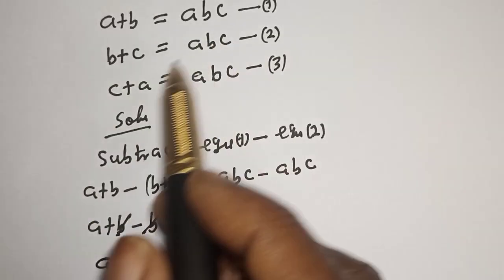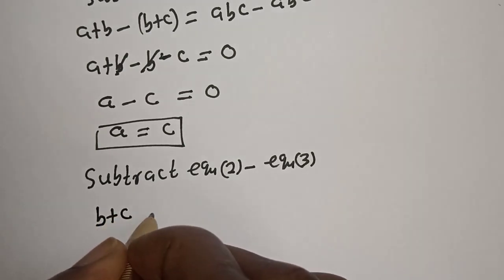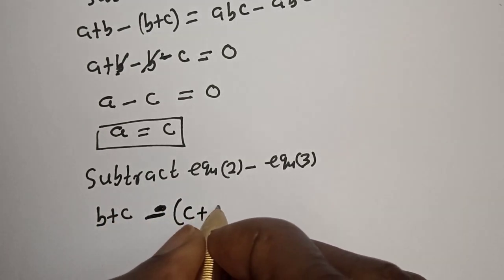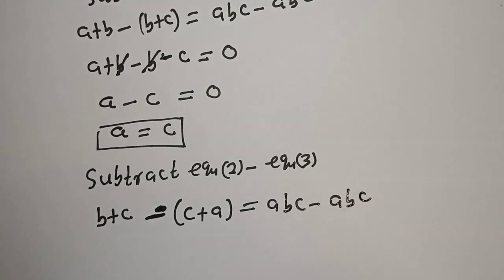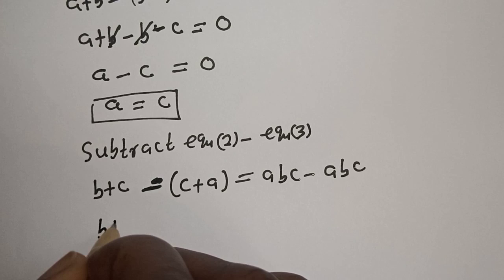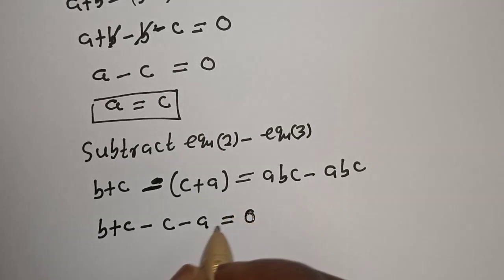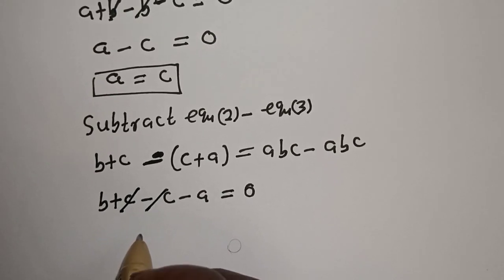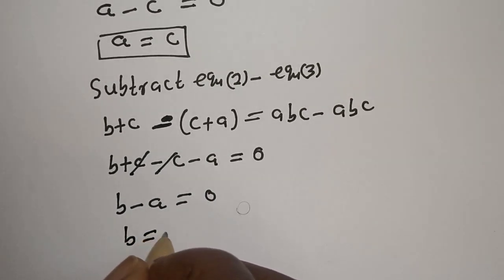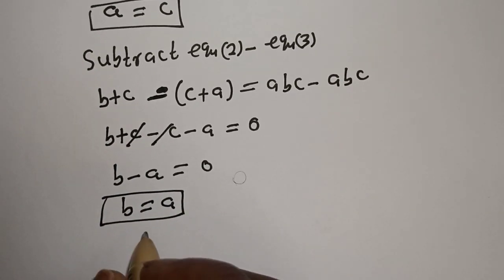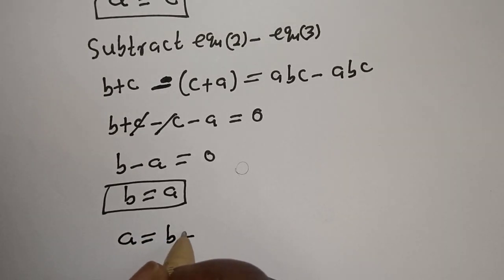Also, let's subtract equation two from equation three. Equation two: b plus c, minus equation three: c plus a, equals abc minus abc. So b plus c minus c minus a equals zero. This cancels, giving b minus a equals zero, so b is equal to a. Therefore a is equal to b is equal to c.